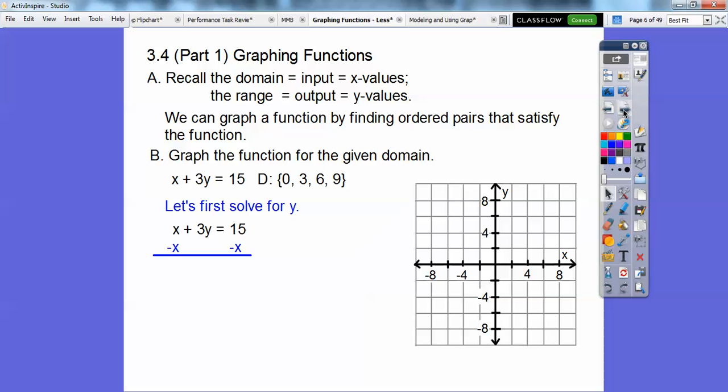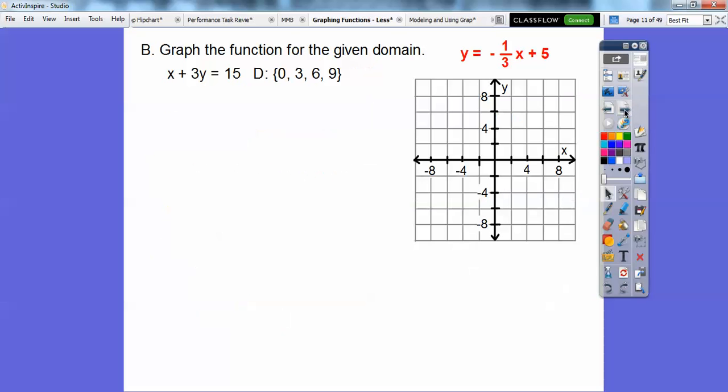First, let's solve for y. We're going to subtract x on both sides, so we get 3y equals negative x plus 15. Then by the division property, we divide both sides by 3, and we get y equals negative one-third x plus 5.